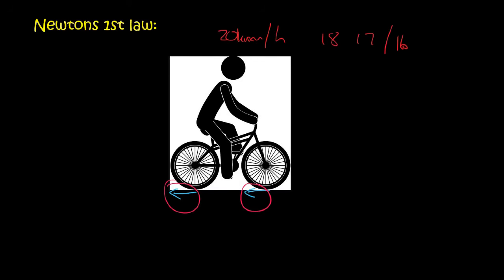16, and so on. But if you want to keep your speed at 20 kilometers per hour, your forward forces must be the same as your backwards forces. That is what Newton's first law is all about.